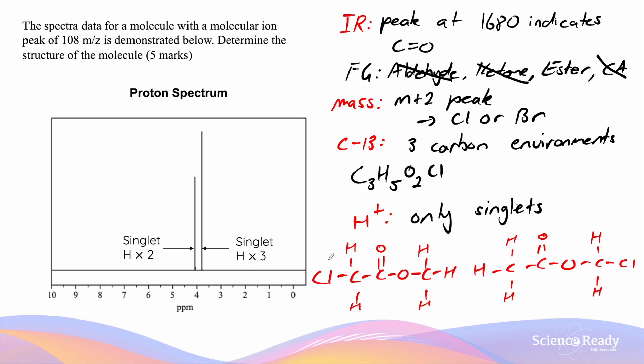So it could either be methyl-chloroethanoate or chloromethyl-ethanoate. Now we need to distinguish which of the following isomers this formula is going to refer to.